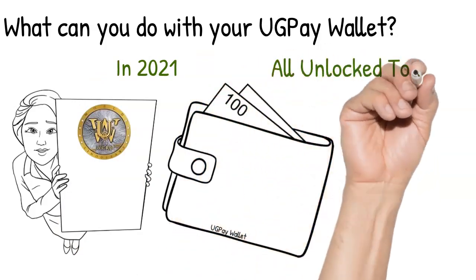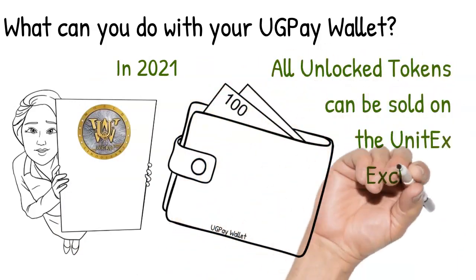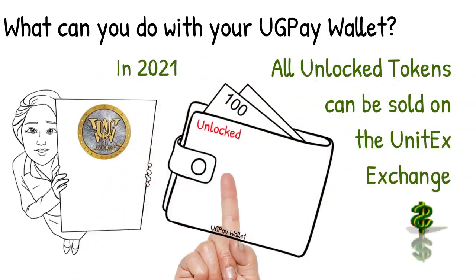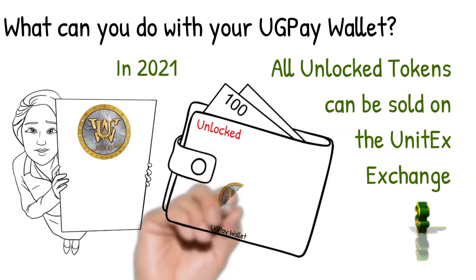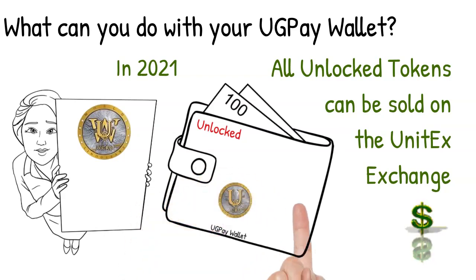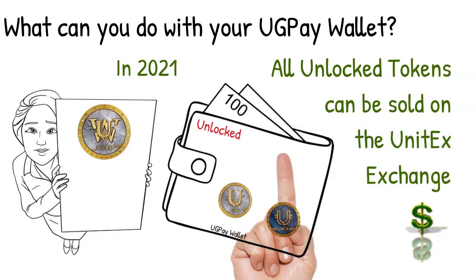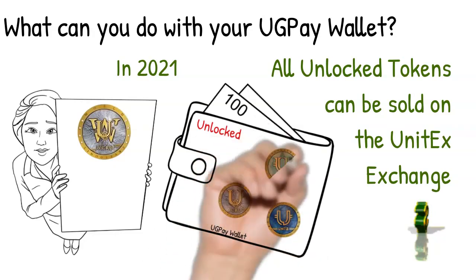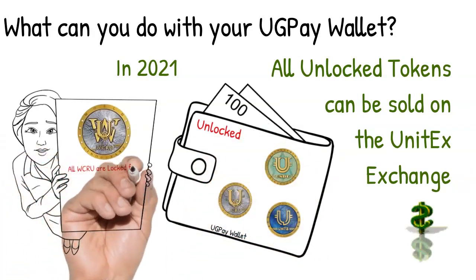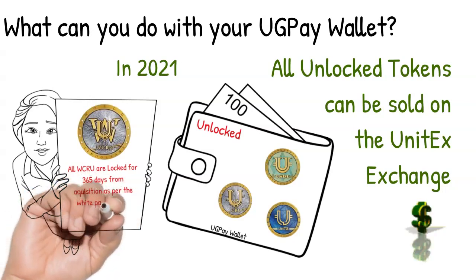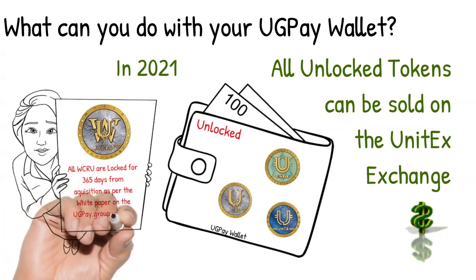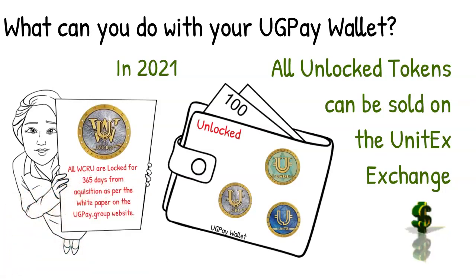In 2021, all unlocked tokens in the ecosystem can be sold on the Unitex exchange. This includes unlocked CRU, all UNTB, and all USDU. As all WCRU are locked for 365 days from acquisition, as per the white paper on the UGPay Group website, you will not be able to trade WCRU on the exchange until 2022.